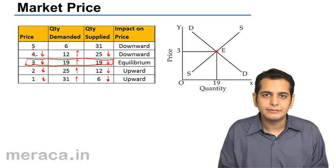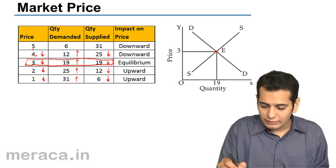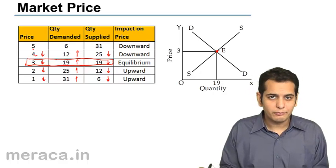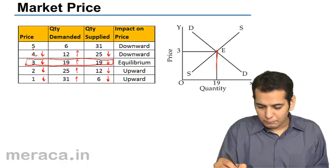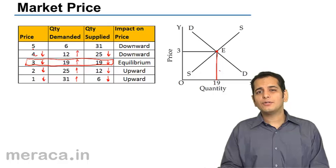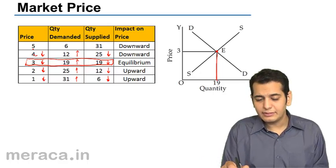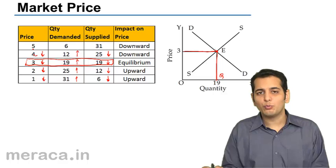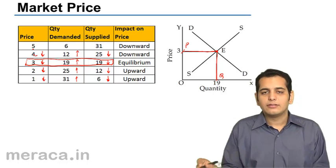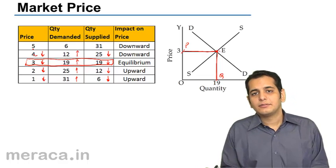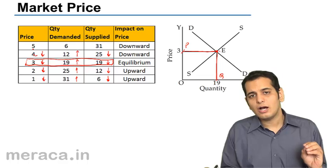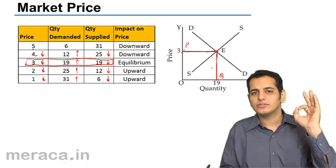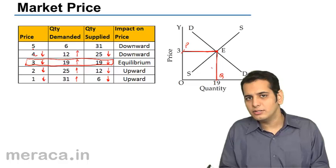We've named this point E. This point gives us the equilibrium price as well as the equilibrium quantity. If we run a perpendicular down to the x-axis from this point, we get the equilibrium quantity. And if we run across perpendicular to the y-axis, we get the equilibrium price. This is how the price is set in the market. In this market, the equilibrium price is 3 rupees, and the equilibrium quantity is 19.